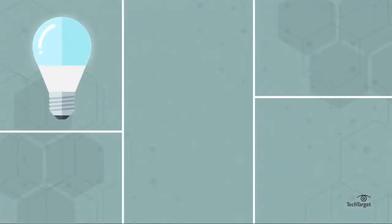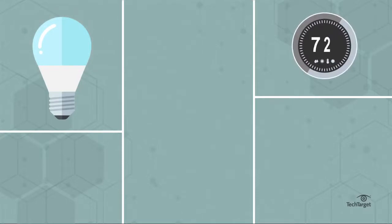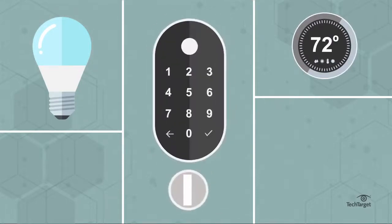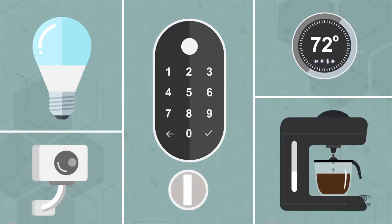Smart homeowners can control lighting systems remotely, schedule and monitor thermostats, grant or deny home access through smart locks, check in on security cameras, and even brew coffee remotely.